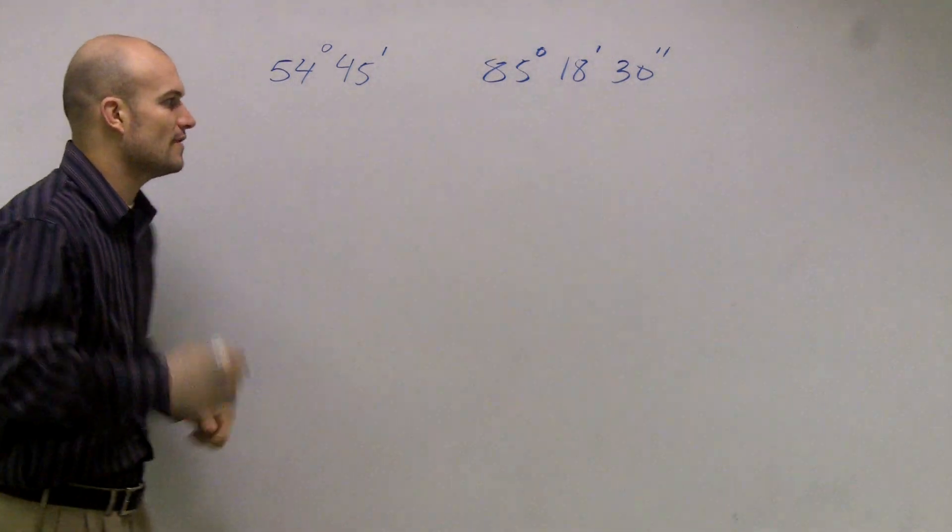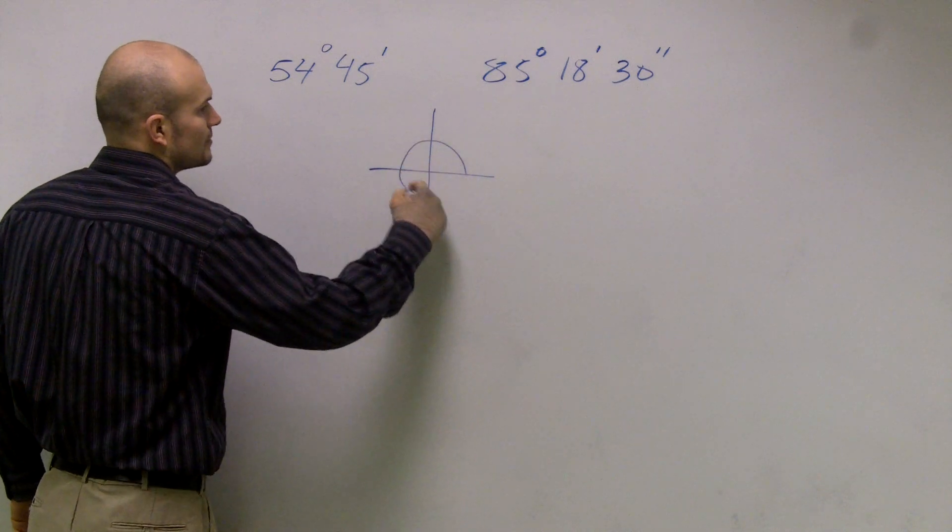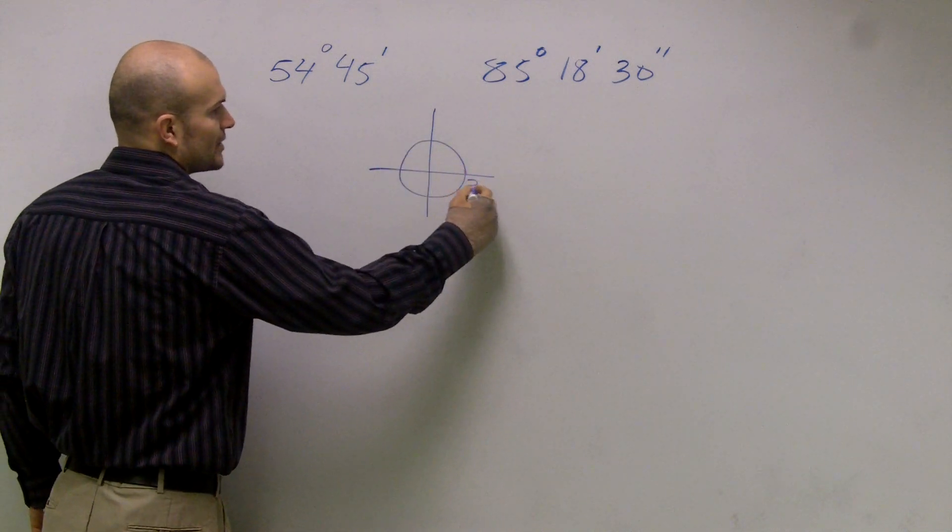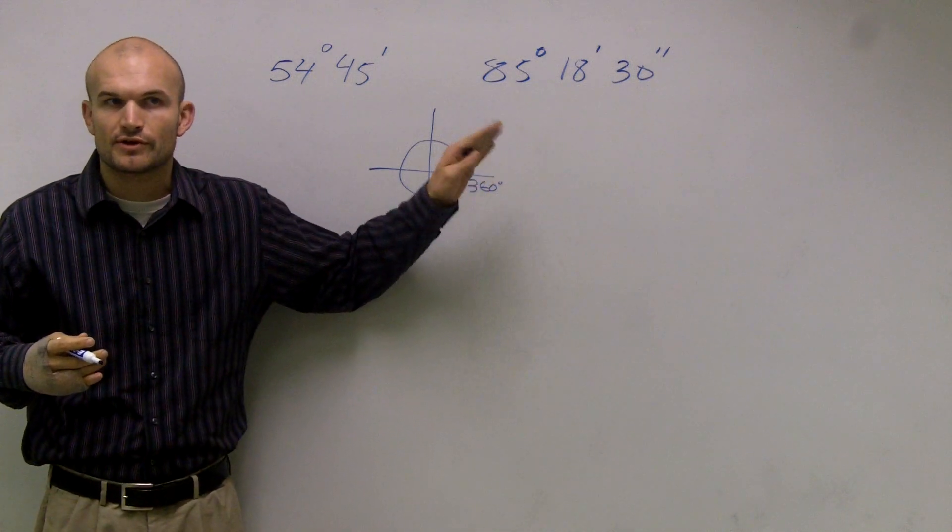So far, you guys know that degrees, you say, oh, from here to here we have 360 degrees. Well, so far, degrees only go up by one degree, one degree, two degree, three degree, four degree.